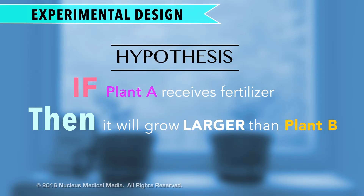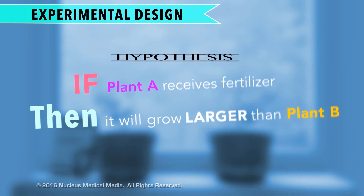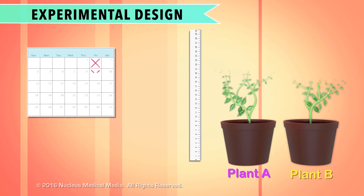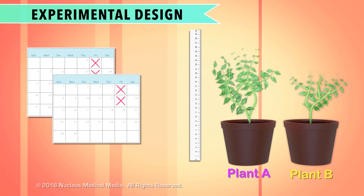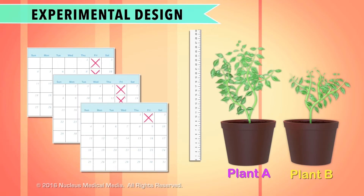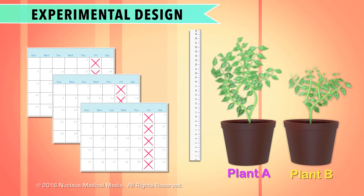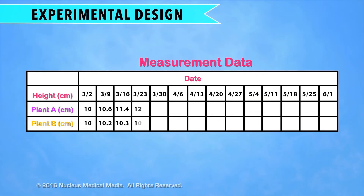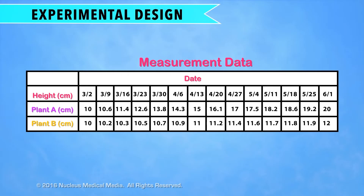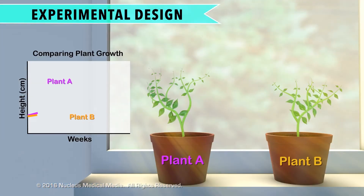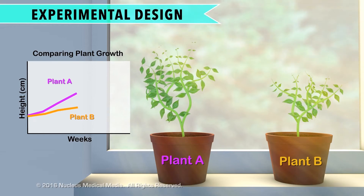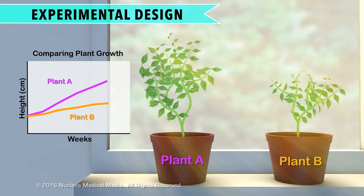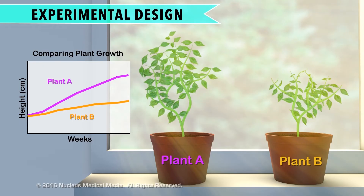How would you know whether your hypothesis is correct? You'd know because you'd regularly measure the plants during the course of the experiment — for example, once a week for a period of three months. You would record these measurements throughout the experiment; these measurements are your data. At the end of the experiment, you would look at your data and compare the measurements of Plant A, which got fertilizer, to Plant B, which didn't get fertilizer.